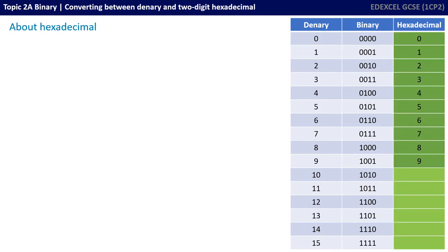Hexadecimal gives us a unique problem, because we have no symbol for the numbers 10, 11, 12, 13, 14, and 15 — because in denary they're represented by combining our symbols 0 to 9. We therefore have to create a symbol to represent these additional numbers.